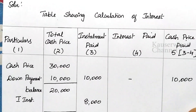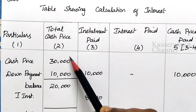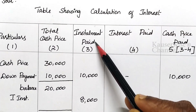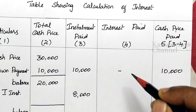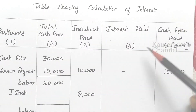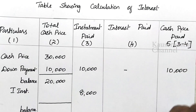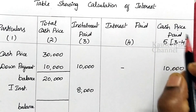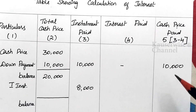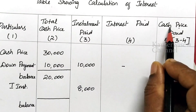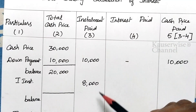Table showing calculation of interest. We have 5 columns: Particulars; Total Cash Price — where we record only cash price calculations; Installment Paid — where we record down payment and 3 equal installments; Interest Paid — where we record the interest included in each installment; and Cash Price Paid — where we record how much cash price is paid in each installment, calculated as installment minus interest.